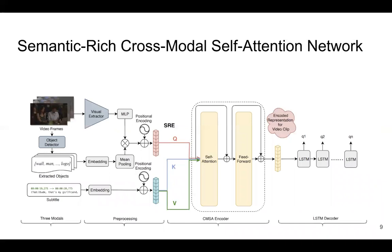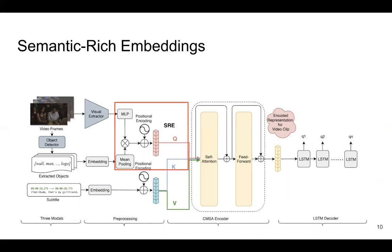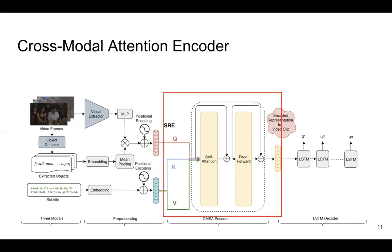Now I'll talk about our model. We propose a semantic-rich cross-modal self-attention network with two components. The first component is semantic-rich embeddings, which enhance the semantics of the visual features. The second component is the cross-modal attention encoder, which fuses the visual and textual information and generates a more powerful representation of the input video frames and dialogues.